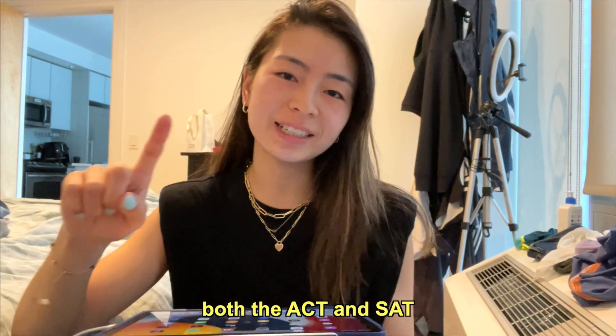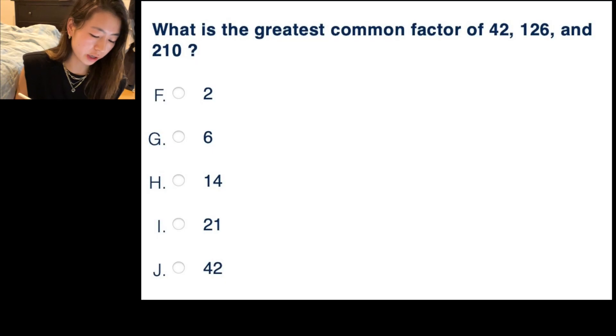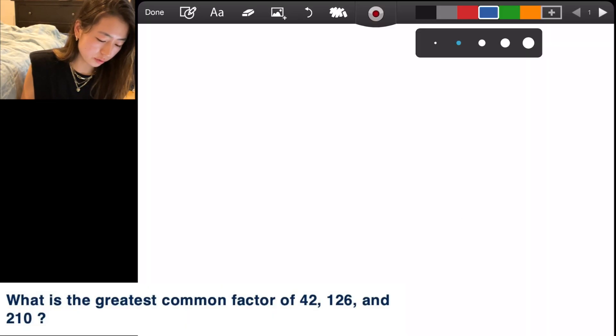These are common problems you'll see on both the ACT and SAT. Greatest common factor and least common multiple come up all the time. What is the greatest common factor of 42, 126, and 210? So what I do is write out the three numbers in a row, leaving some space between them.